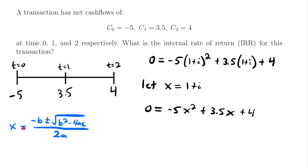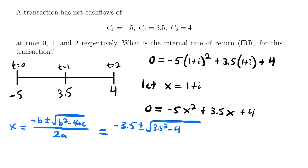We can solve this quadratic equation using the quadratic formula: x equals negative b plus or minus the square root of b squared minus 4ac, all divided by 2a. Here a, b, and c correspond to the coefficients of our terms. A is the coefficient of the x squared term, b is the coefficient of the x to the first power term, and c is the constant term. In this case a is negative 5, b is 3.5, and c is 4. So x equals negative 3.5 plus or minus the square root of 3.5 squared minus 4 times negative 5 times 4, divided by 2 times negative 5.